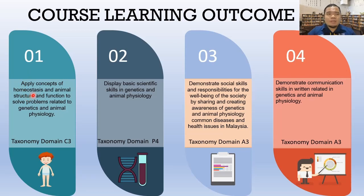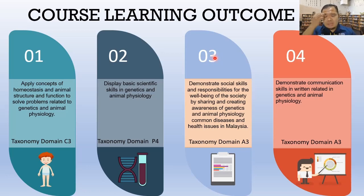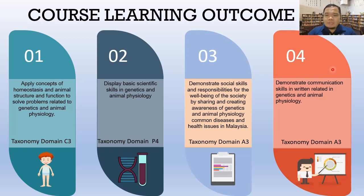In brief, the first course learning outcome covers what you learn in lectures and tutorials. The second is what you learn in the lab practical sessions. The third involves presenting information related to genetics and animal physiology diseases. The fourth is the communication skill where you share your knowledge with an audience or the community.